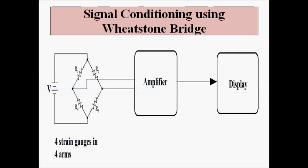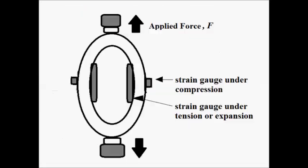This is the basic principle behind the four strain gauges — two placed on the outer side and two on the inner side. The outer strain gauges undergo compression while the inner strain gauges undergo expansion.